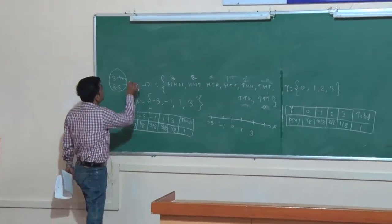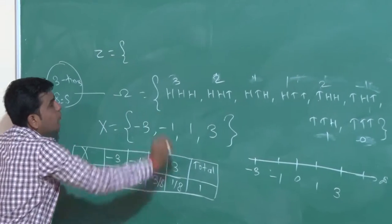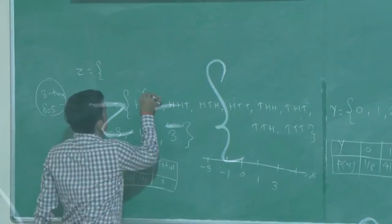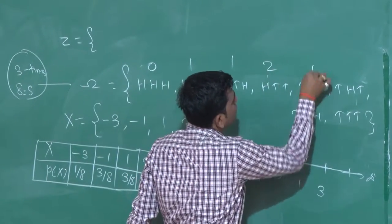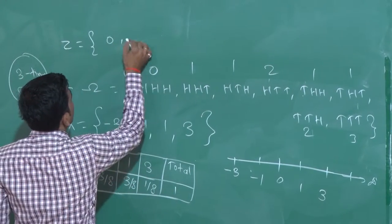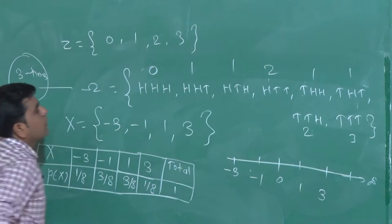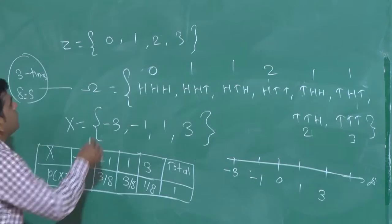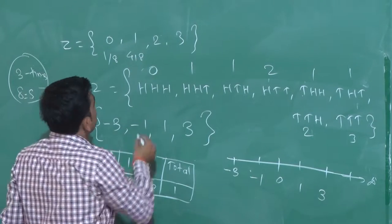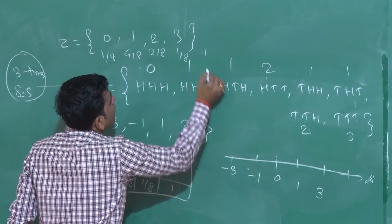Similarly, you have to define the third random variable Z, which is the run length of tail. So here the values are 0, 1, 1, 2, 1, 1, 2, and 3. So Z is the random variable which will give the values 0, 1, 2, and 3. Probabilities: P(0) = 1/8, P(1) = 4/8, P(2) = 2/8, P(3) = 1/8; total probability is 1.